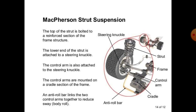In construction, the top of the strut is bolted to a reinforced section of the frame structure. The lower end of the strut is attached to the steering knuckle. The lower end of the control arm is also connected to the steering knuckle. The control arm is mounted on a cradle section of the frame, and an anti-roll bar links the two control arms together to reduce sway.